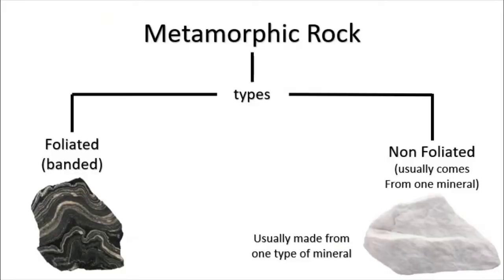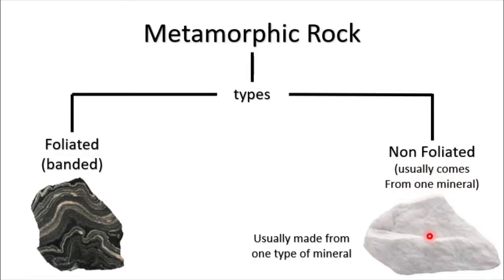Looking at the different types of metamorphic rocks: the first type is foliated, also known as banded — you can see the bands of lines of minerals coming from the original parent material of the rock. Another type of metamorphic rock is non-foliated. This occurs because the rock is usually coming from only one mineral. An example is limestone when it is metamorphosed — limestone is a sedimentary rock, and when metamorphosed it becomes marble. That's why it has only one type of color and no bands. These are the two types of metamorphic rock: banded and non-banded.